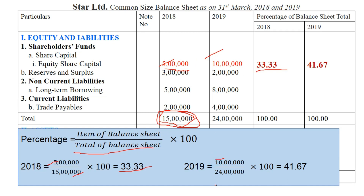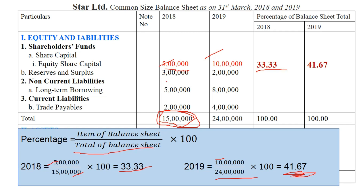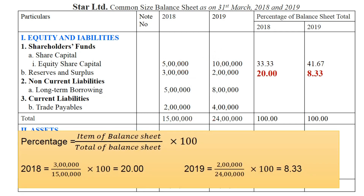Same for 2019: 10 lakh is the equity shares, 24 lakh is the total of the balance sheet — so the percentage is 41.67. The next one is reserve and surplus. Reserve is 3 lakh in 2018 and 2 lakh in 2019. In 2018 it is 20 percent, whereas in 2019 it is 8.33%. The component of the balance sheet will total 100. Equity share capital is 33% of your total liability side, whereas reserve and surplus is 20%. This means 8.33% of your financial position is held as reserve and surplus in 2019 — the remaining reserve has either been invested or utilized for other purposes.